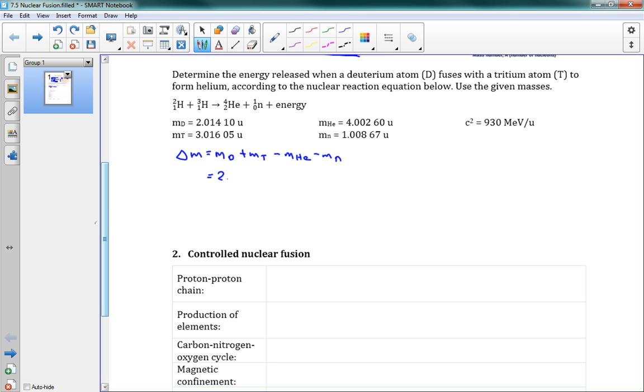We can plug in our numbers here. So we get 2.0140 plus 3.01605 minus 4.00260 minus 1.00867. This gives us a mass defect of 0.01888 units. That's our mass defect. And we want to find our energy now. That's equal to delta m c squared. We're going to use our new version of c squared. So the delta m is 0.01888, and c squared is 930 mega electron volts per unit. And this gives us an energy straight away 17.56 mega electron volts.